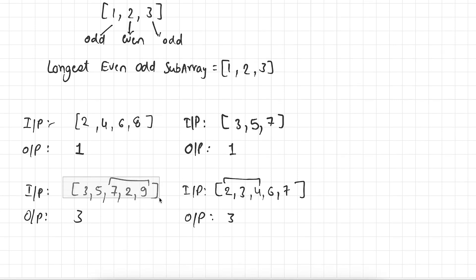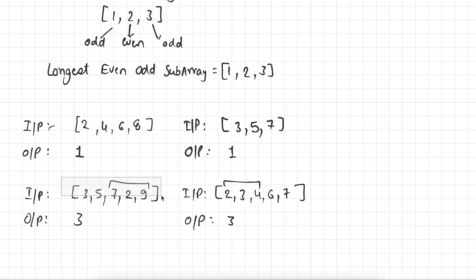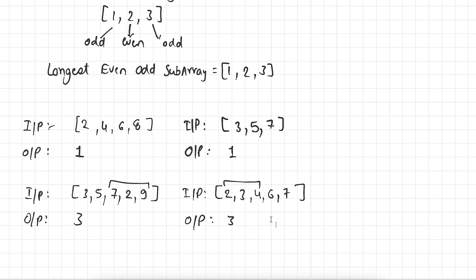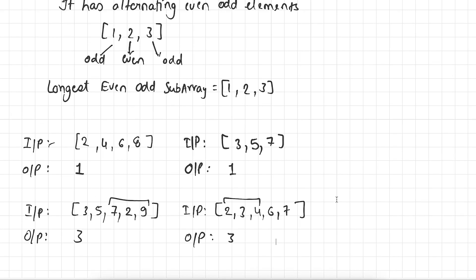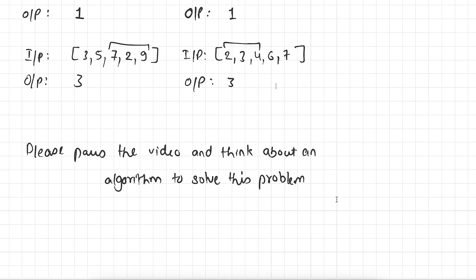Here we have 3, 5, 7, 2, 9. You can see that 7 is odd, 2 is even, and 9 is also odd. So the longest even-odd subarray of this particular array is 3, formed by numbers 7, 2, and 9. And here we have 2, 3, 4, 6, 7 — 2 is even, 3 is odd, and 4 is even, then both remaining numbers are odd. So the longest even-odd subarray of this array is also 3, formed by numbers 2, 3, and 4.